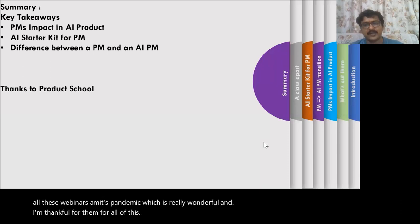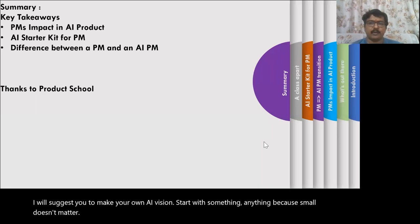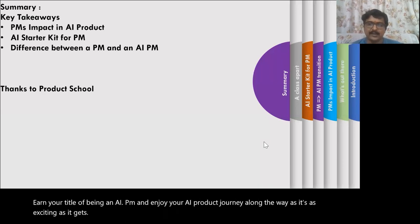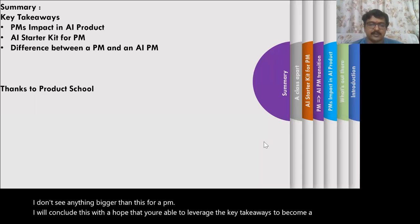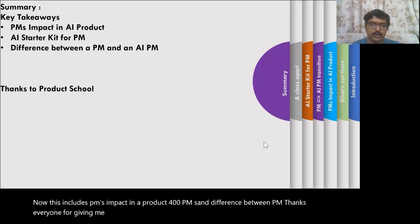Finally, to conclude, I suggest you make your own AI vision. Start with something — anything, big or small, doesn't matter. Define your impact as a PM in your AI product. Earn your title of being an AI PM and enjoy your AI product journey along the way, as it's as exciting as it gets. I will conclude with the hope that you are able to leverage the key takeaways to become a rockstar PM, which is an AI PM. This includes PMs impact in an AI product, AI starter kit for PMs, and the difference between a PM and an AI PM. Thanks everyone for giving me an opportunity to speak on this wonderful topic. I hope this session is useful for you. Thank you.